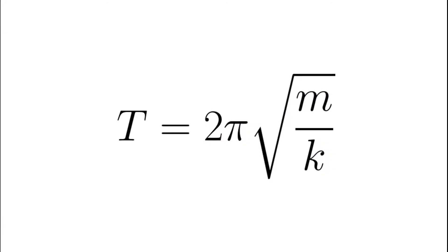The oscillation period of a spring is given by this formula. We have the mass, but we need to know the stiffness constant of the spring.